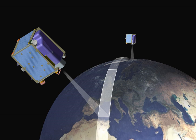Earth Exploration Satellite Service, also Meteorological Satellite Radio Communication Service, is according to Article 1.51 of the International Telecommunication Union's Radio Regulations defined as a radio communication service between Earth stations